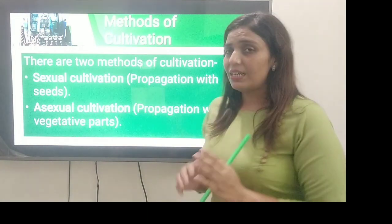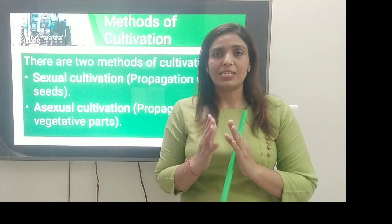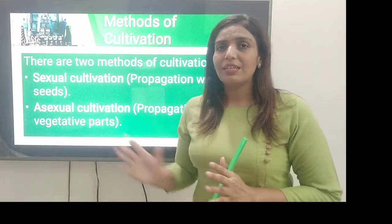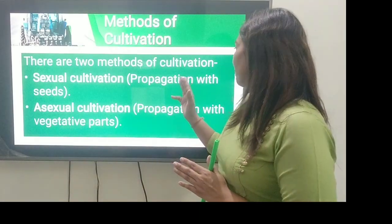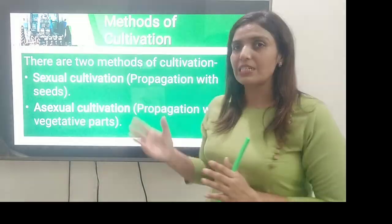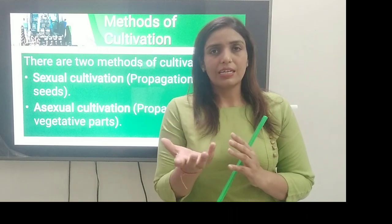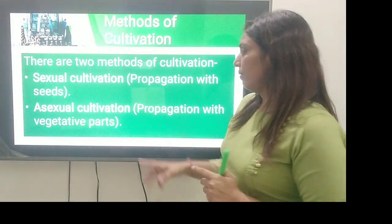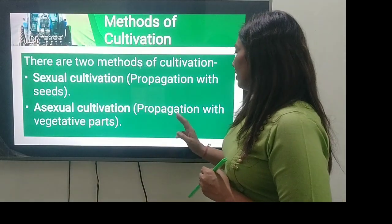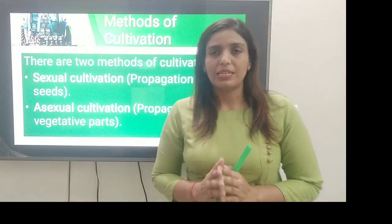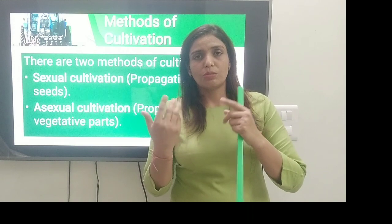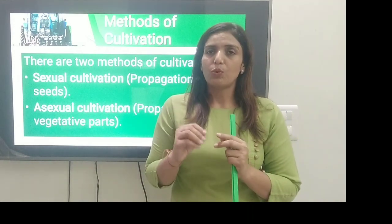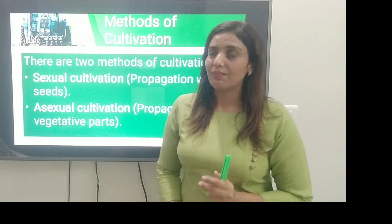Next क्या है — method of cultivation. There are two methods of cultivation: sexual cultivation and asexual cultivation. Sexual cultivation है — जो हम करते हैं by propagation with the seeds, यानी seeds के ज़रिए crop को grow करते हैं. Asexual cultivation में क्या होता है — propagation with the vegetative part, that is उस plant का कोई part use करते हैं: stem है, root है, leaves हैं — हम कोई भी part use करके उसके ज़रिए cultivation करते हैं.